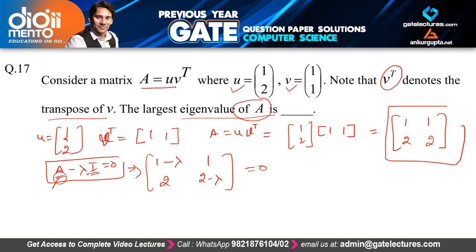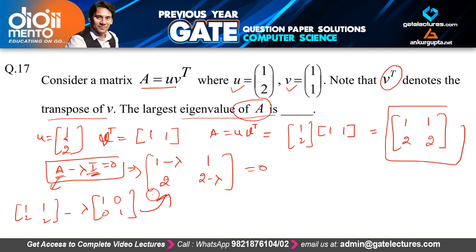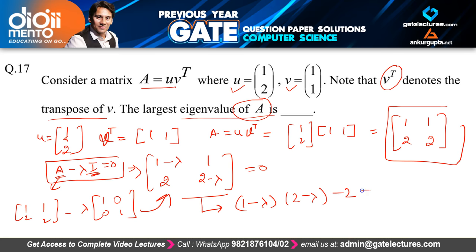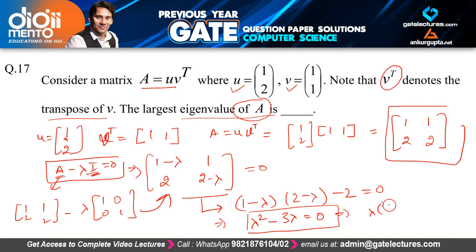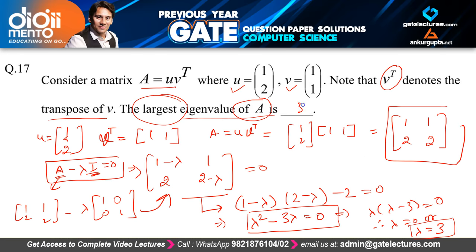Setting the determinant equal to zero: (1−λ)(2−λ) − 2 = 0. Expanding this gives λ² − 3λ = 0, which factors as λ(λ − 3) = 0. Therefore λ = 0 or λ = 3. We have two eigenvalues: 0 and 3. Since they ask for the largest eigenvalue, the answer is λ = 3.